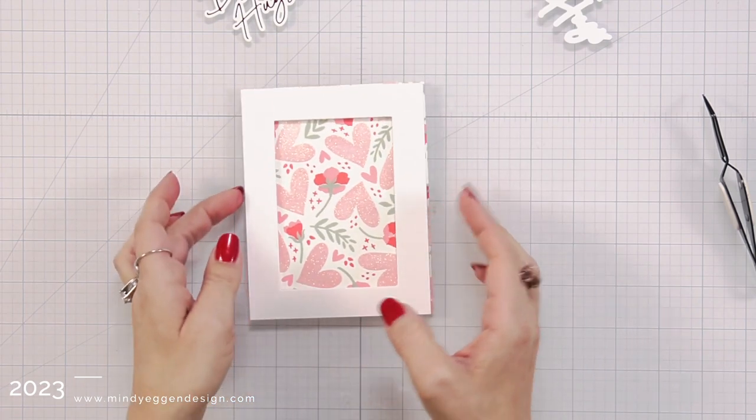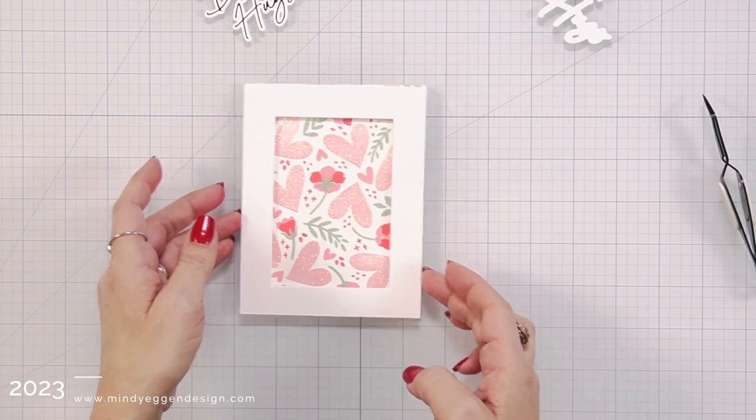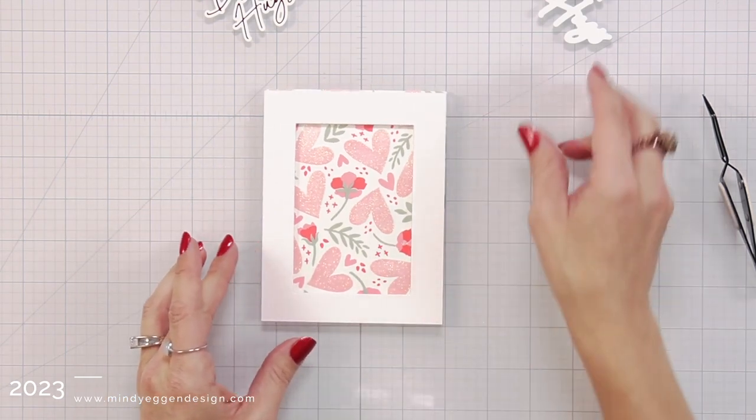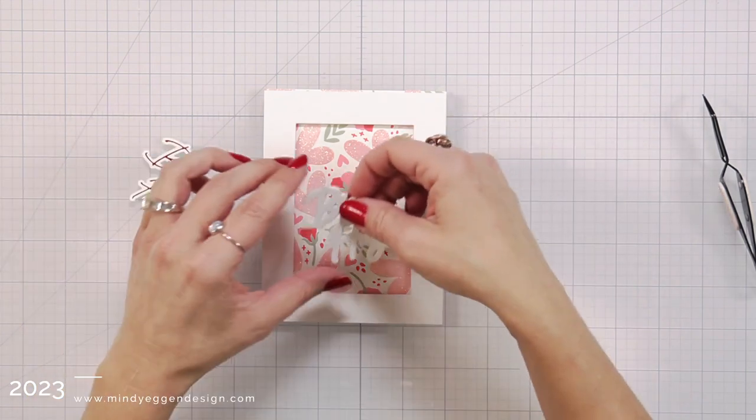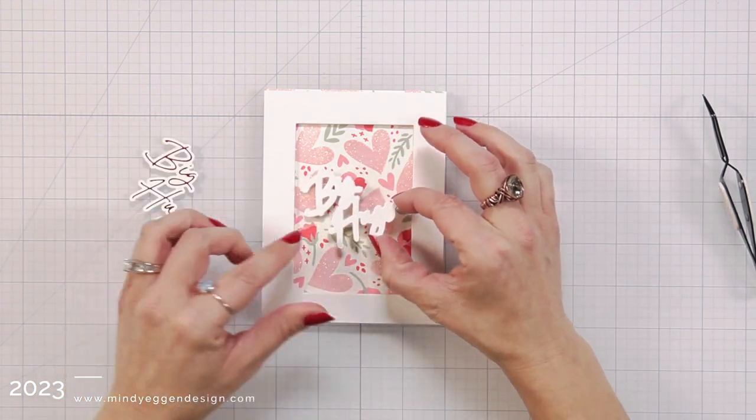Now I'm going to temporarily just kind of place my frame over my background for right now. I'm not gluing it down just yet. And I'm still trying to decide what color sentiment I want to use. If I want the gold, the red or the black. So here is my layered piece.